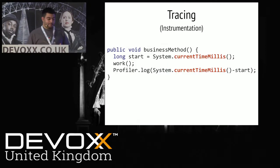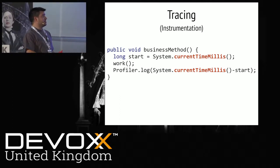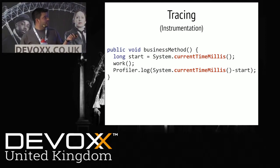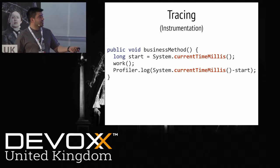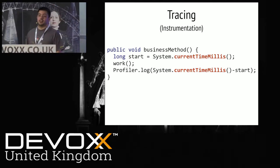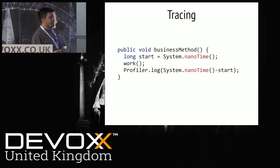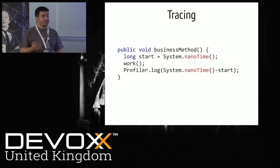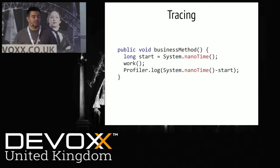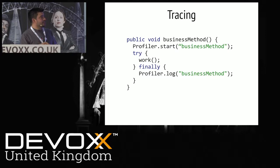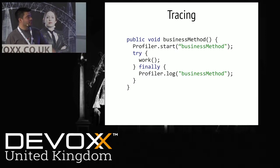Now let's go over to tracing — tracing with instrumentation. Here we have our business method. We're going to instrument at the start and at the end, basically just hitting current time in milliseconds. We log when we start, we log how long it's taken. That's effectively what tracing does — it marks at the start and end of a method how long you spent in it. We can do this in nano time instead of current time millis, which gives you more precise detail.